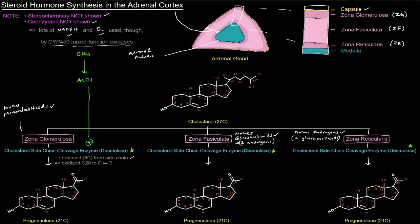It's also worth noting that LH can also stimulate the desmolase, but LH — luteinizing hormone — is important in the gonads, not here in the adrenal cortex. It specifically stimulates the theca cells in the ovaries in females and the Leydig cells in the testes of males. But once pregnenolone is made — and it can happen in any of the zones — we can basically commit it to steroid hormone production in the cortex.